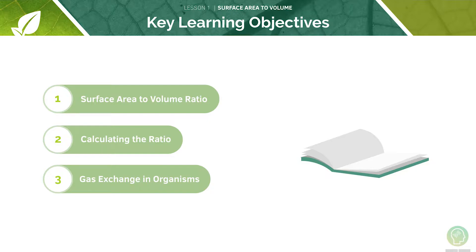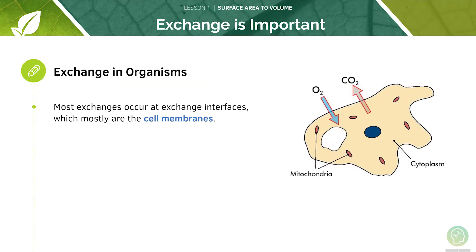We'll start off with surface area to volume ratio, move on to calculating the ratio, and finally look at gas exchange in organisms. All organisms — unicellular and multicellular — are separated from their external environment, and in order to survive they have to exchange food, gases, waste, and other materials with their environment. Most of this exchange will happen at the cell membranes.